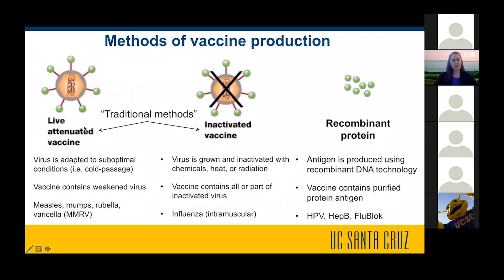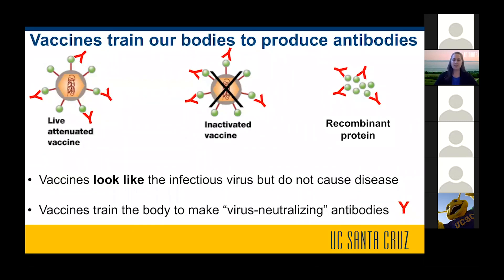We have our traditional methods such as live attenuated and inactivated vaccines, and what I'm going to talk about today is something called a recombinant protein vaccine. This is where the antigen is produced using recombinant DNA technology in the lab — the vaccine contains just the purified antigen and does not require the growth of the virus in the lab. We already have several of these recombinant protein vaccines on the market, including a flu shot called Flublok. In all cases, vaccines train our bodies to produce antibodies. These vaccines look like the infectious virus but do not cause disease, and they train our bodies to make virus-neutralizing antibodies — antibodies that stick like glue to the real virus and prevent it from causing an infection.